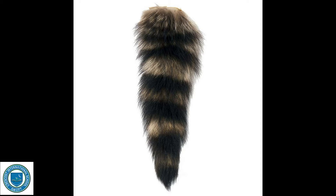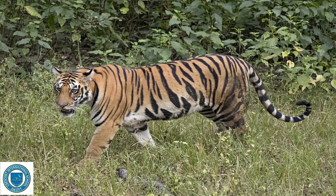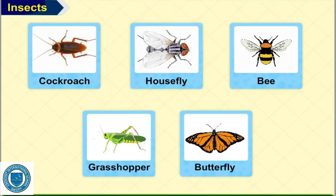Animals also differ in the shape and size of their tails. For example, the tail of a dog is smaller than the tail of a tiger. Some animals have a tail and some do not have a tail.